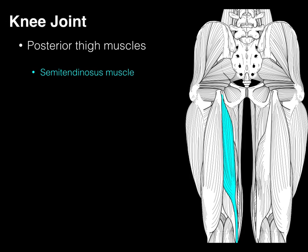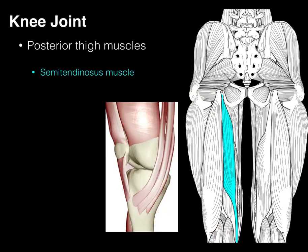There's our semitendinosus. It arises from the ischial tuberosity, and then it courses all the way down to attach medial to the tibial tuberosity. Looking at a medial view of the knee, we've got the patella and the tibial tuberosity. This is the medial part of the knee, where the sartorius from the anterior thigh muscles, the gracilis from the medial thigh muscles, and the semitendinosus from the posterior thigh muscles form what's called the pes anserinus.